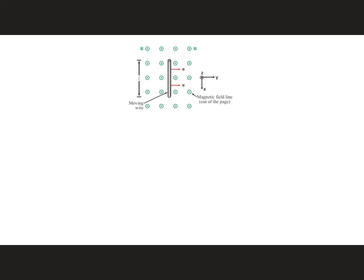In part A of this problem, the electrons in the moving wire are going to feel a Lorentz force, minus E, the charge of electron, the speed crossed with B applied, which is coming out of the screen.